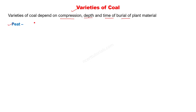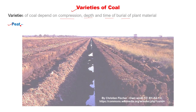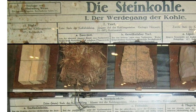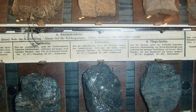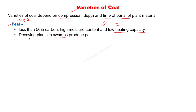The first variety is peat. People in rural areas may have seen it. It is found at very shallow depths near the surface. Branches and leaves fall, go slightly below the surface, and their color begins to change — they become a little black. Peat has high moisture content, so it doesn't burn properly and produces smoke. Carbon content is less than 50%, moisture is high, and heating capacity is low. Like wet wood burns poorly and smokes, peat is similar. Plant dead remains in swampy areas fall, decay, and form peat.